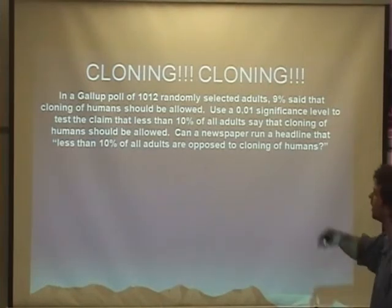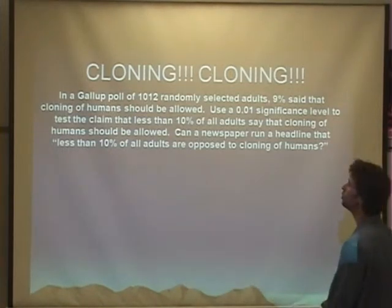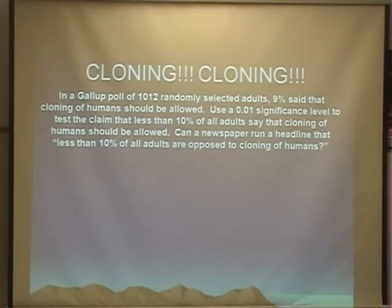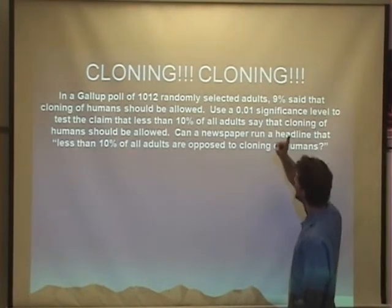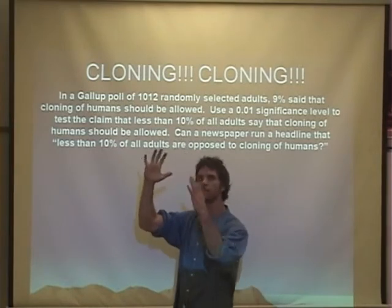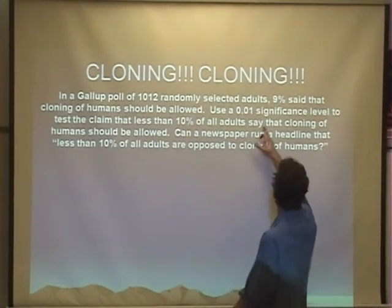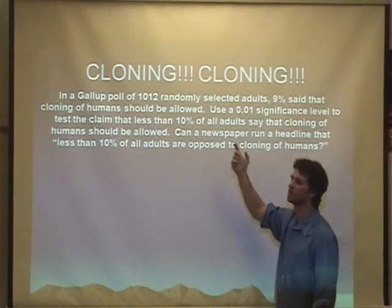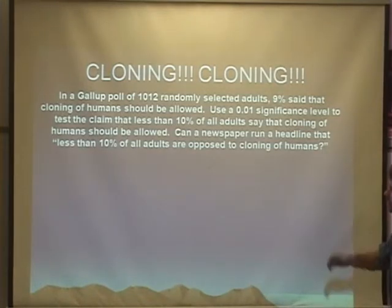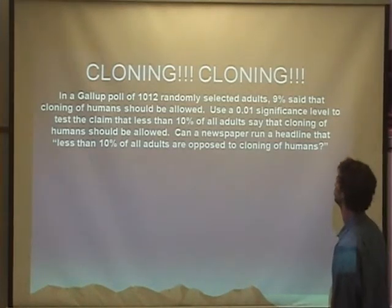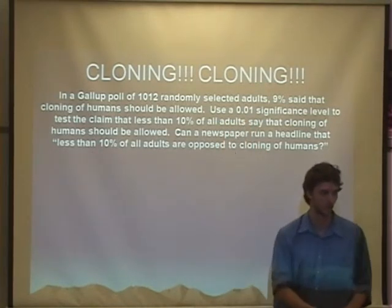So here we have a Gallup poll of 1,012 randomly selected adults. Nine percent said that cloning of humans should be allowed. Use a 0.01 significance level, aha, there's our alpha. To test the claim - this is the key information - that less than 10% of all adults say that cloning of humans should be allowed. That is your claim.